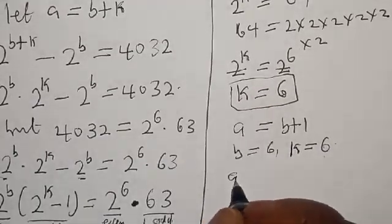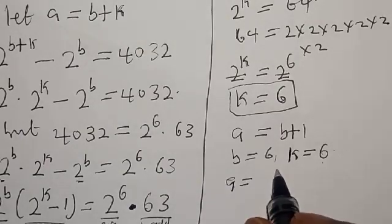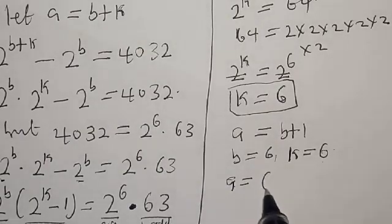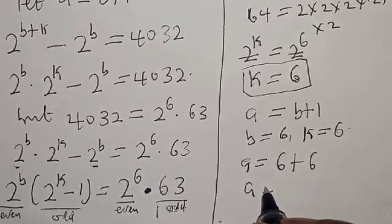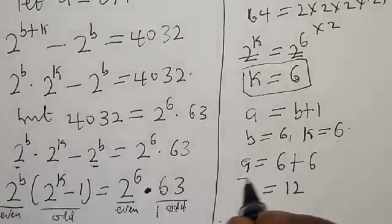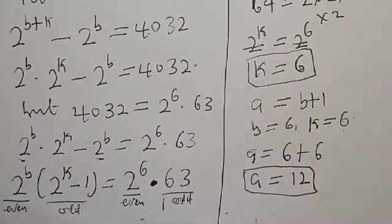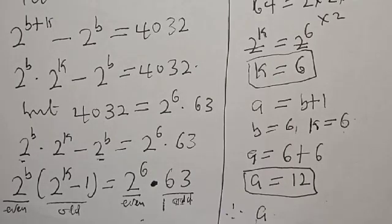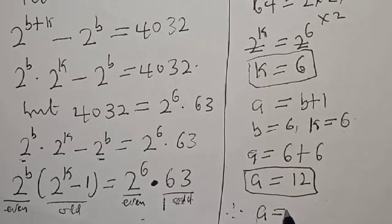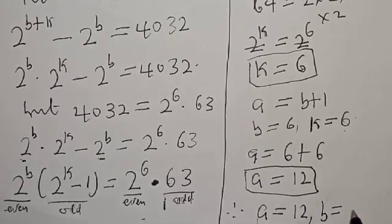Now we know that a equals b plus k, and b equals 6, k equals 6. Therefore a is now equal to 6 plus 6, so our a is equal to 12. The question asks us to find the value of a and b where a and b are positive integers. Therefore our final answer is a equals 12 while b equals 6.